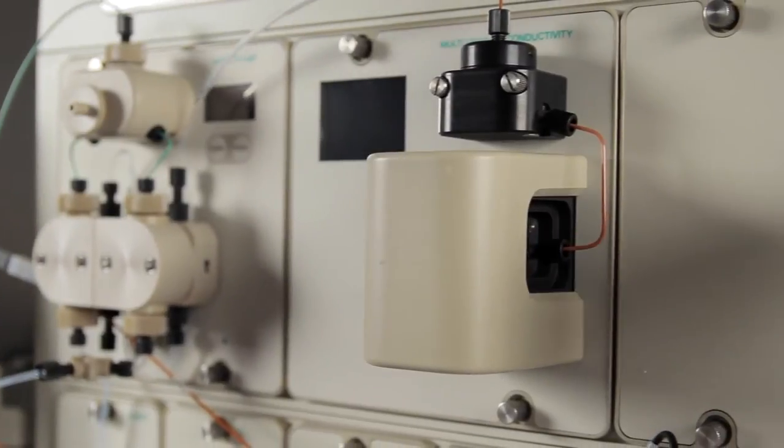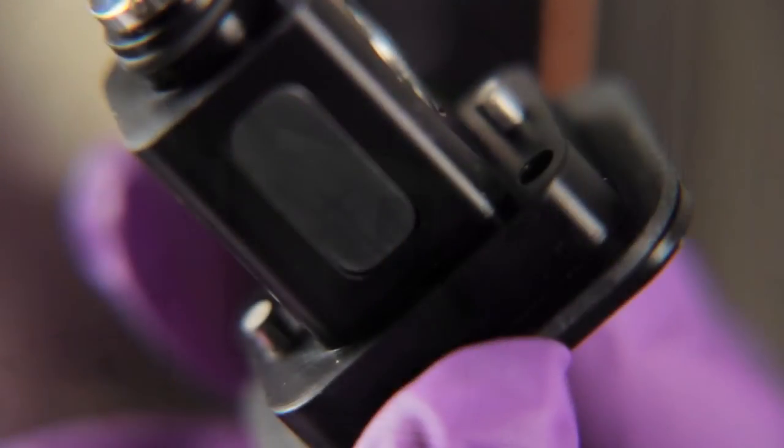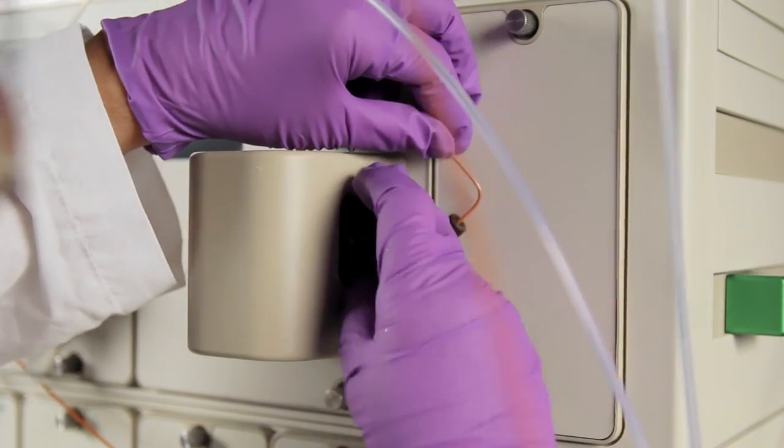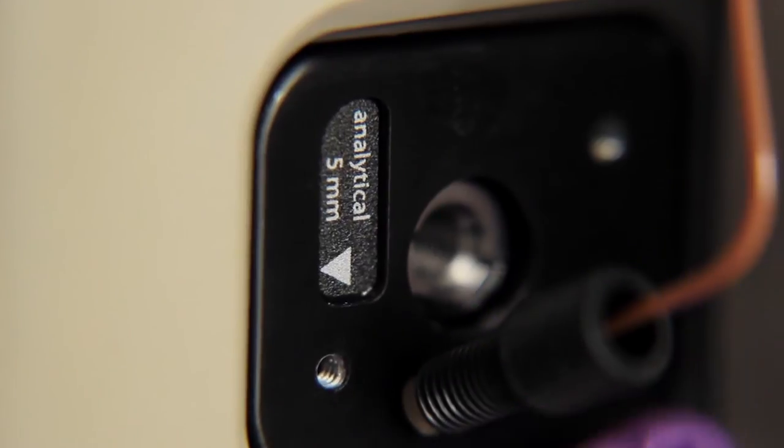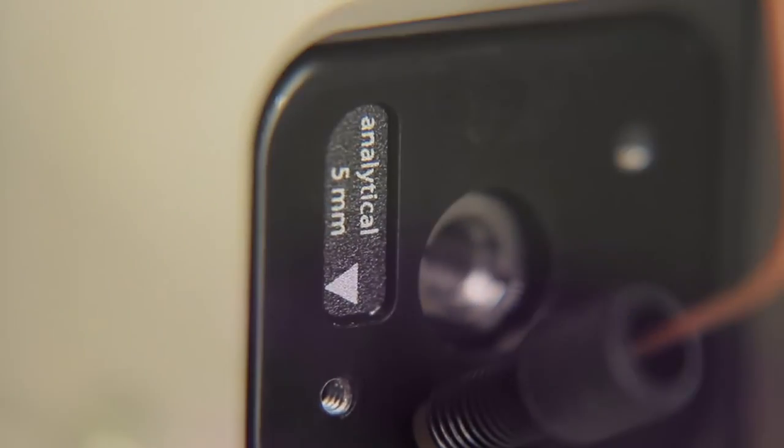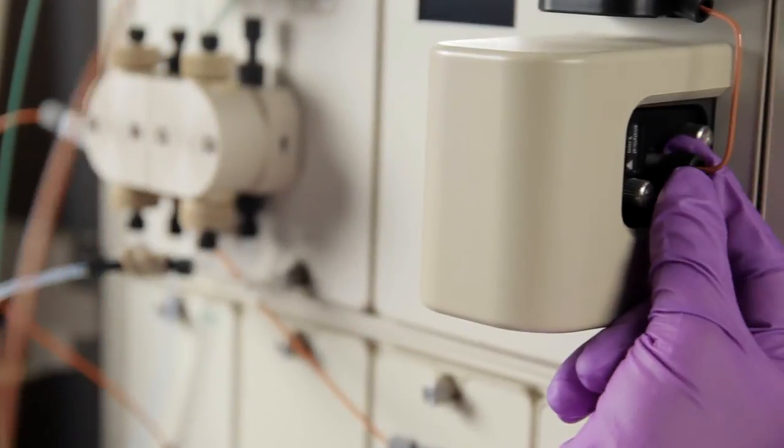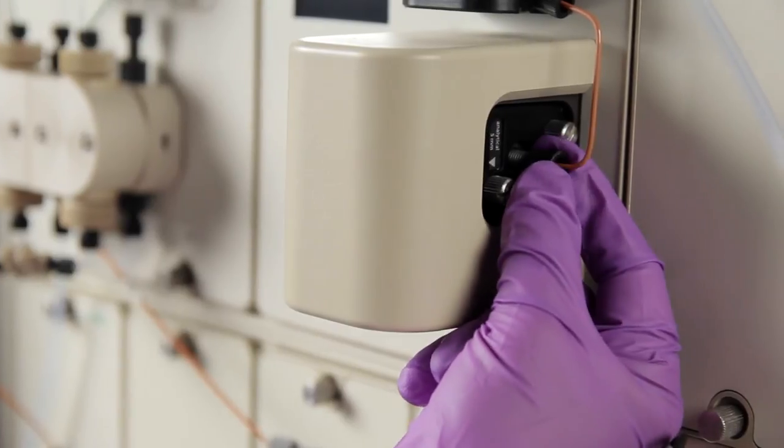Return the flow cell to its socket on the UV monitor, ensuring that the two bolts on the cell align with the holes in the socket and that the arrow on the flow cell is pointing to the left. The guides on the bottom of the flow cell will help you prevent inserting it incorrectly. Tighten the thumb screws and reconnect the 1-428 fittings on both sides of the flow cell.